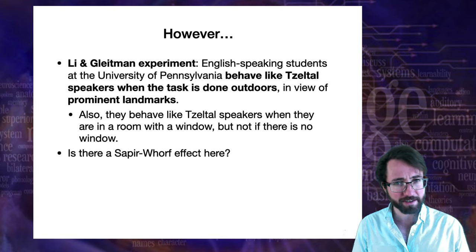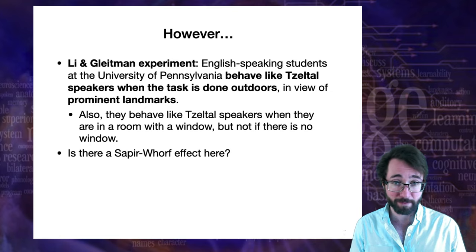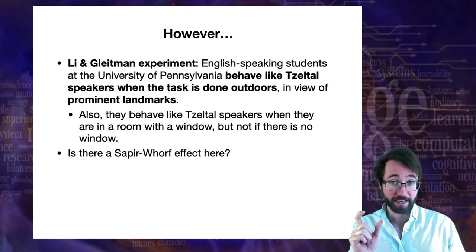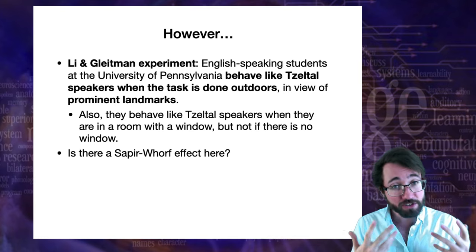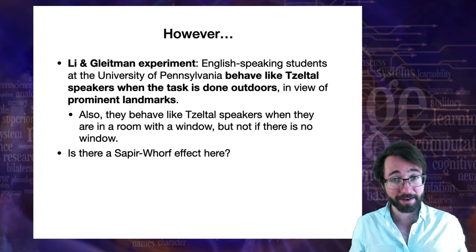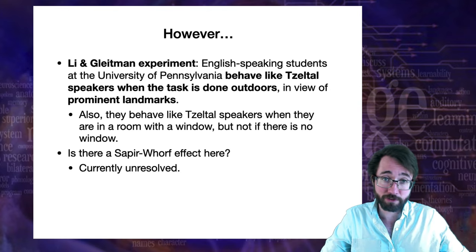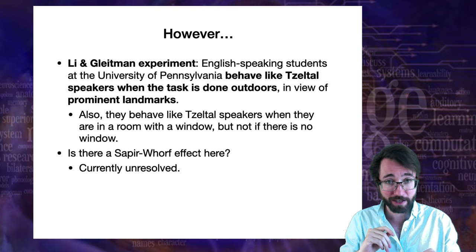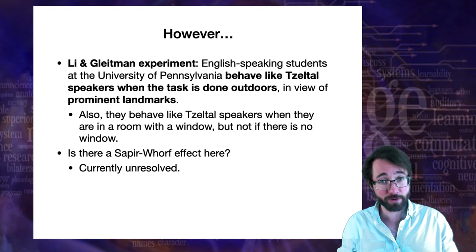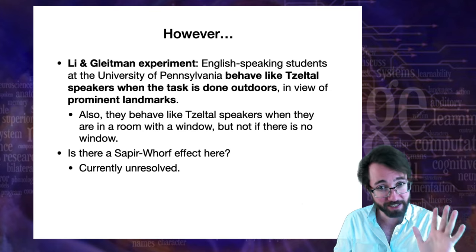So is there really a Sapir-Whorf effect here? It's complicated. In terms of language directly affecting thought, it looks like no — it has more to do with your environment. But your environment can affect your language: people who live in environments with stable landmarks end up speaking absolute space languages, which reflect thinking they were already doing based on their environment. This is an area where the evidence is unresolved, with a lot of back and forth between research groups doing the experiment in slightly different ways.